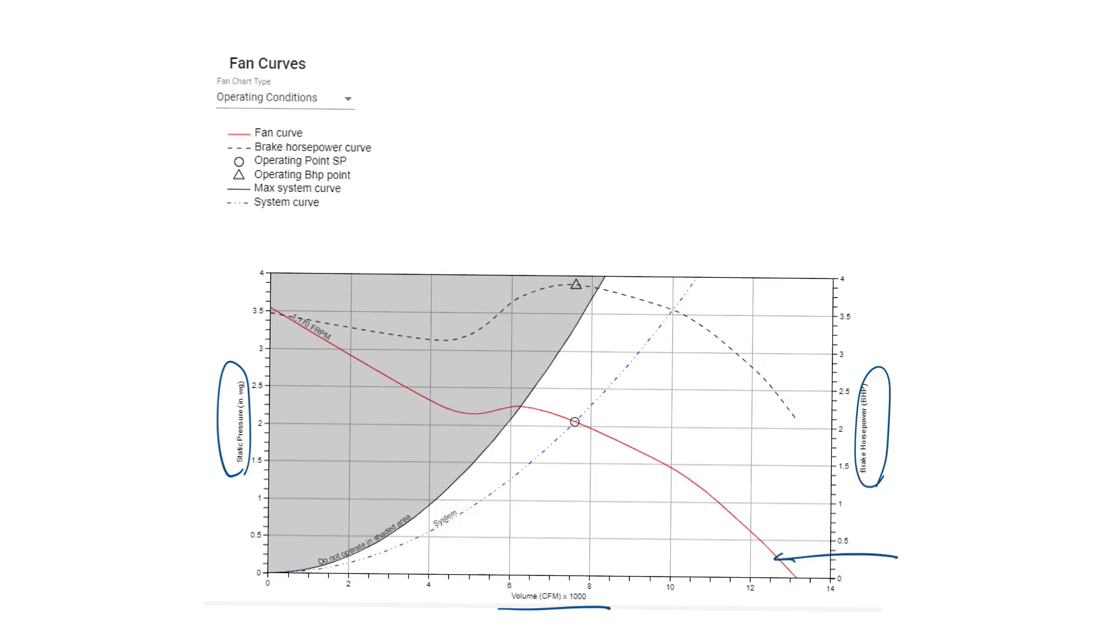The red line is our fan curve. This is how the fan performs as the static pressure changes. This curve represents the performance at a specific RPM. And I'm using the term fan here to mean the entire assembly, including the drive components.